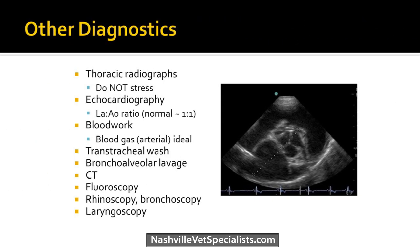Other diagnostics once the pet is more stable include chest x-rays and echocardiograms to rule out heart disease. On echo you can look at the LA:Ao ratio — left atrium to aorta. Normally it should be about one-to-one; if it's higher, that indicates enlarged left atrium and likely left-sided heart failure. Blood work can be helpful too. Tertiary diagnostics include tracheal washes, lavage, CT, and bronchoscopy — not something done when the pet first comes in.